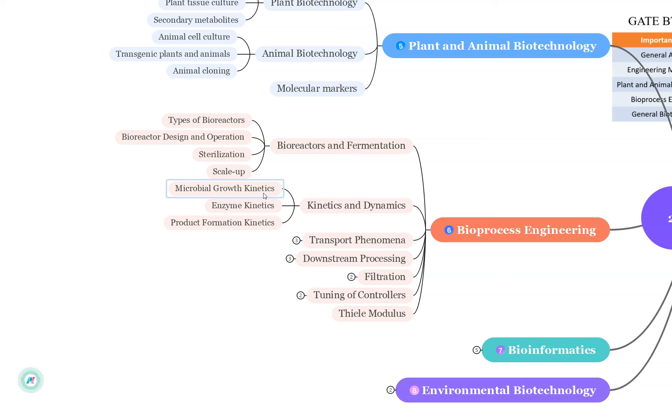Next is Kinetics and Dynamics. Here microbial growth kinetics focus on the Monod equation, substrate limited growth and yield coefficients. Enzyme kinetics: the Michaelis-Menten kinetics which is also common with the biochemistry portion. The inhibition kinetics, different types of enzyme inhibition like competitive, non-competitive, uncompetitive and how their growth and equations look like and also the immobilized enzyme systems. The product formation kinetics: study about the types of product formation such as growth associated and non-growth associated.